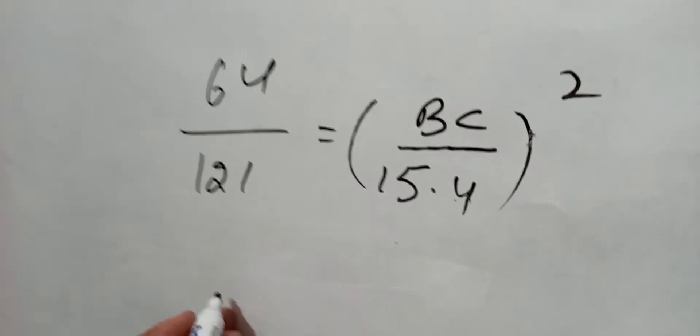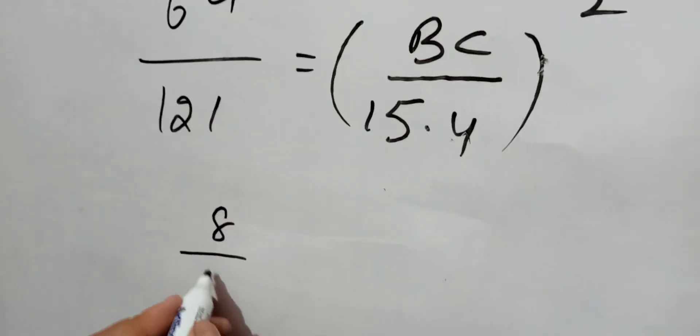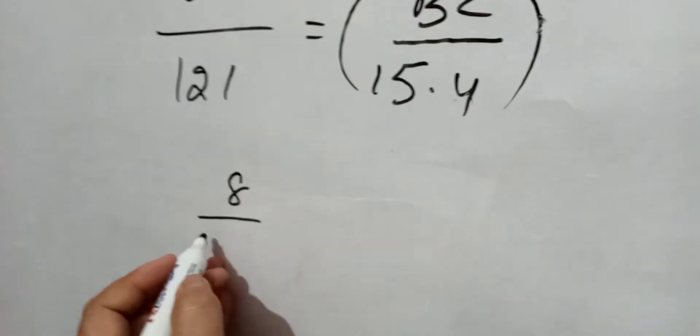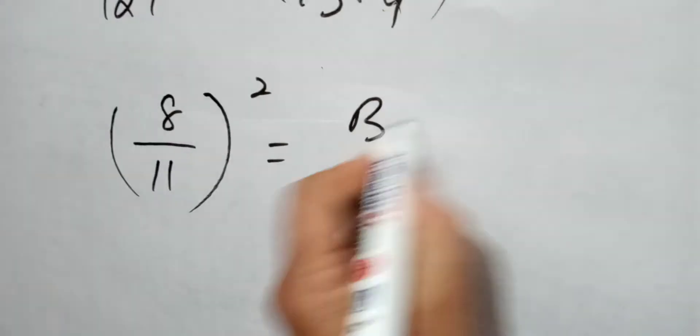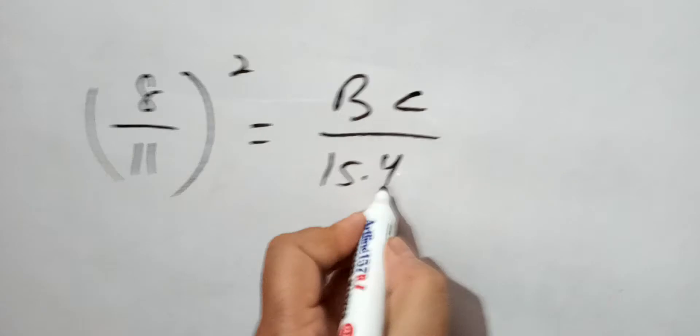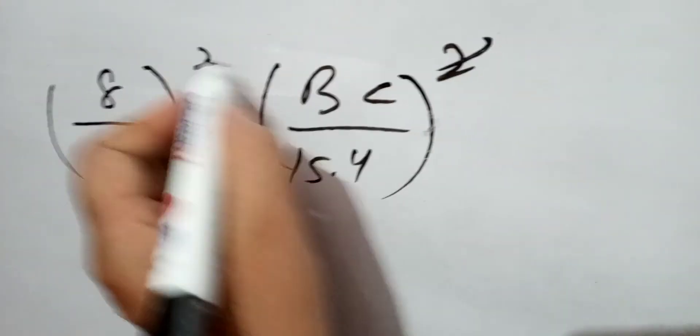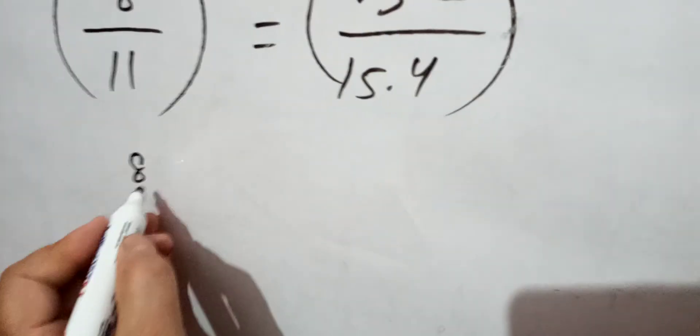What is the square root of 64? This is 8. What is the square root of 121? That is 11. Which is equal to BC over 15.4. Now by cross multiplication, 15.4 by 11 equals BC times 11, so 8 times 15.4 divided by 11 equals BC.